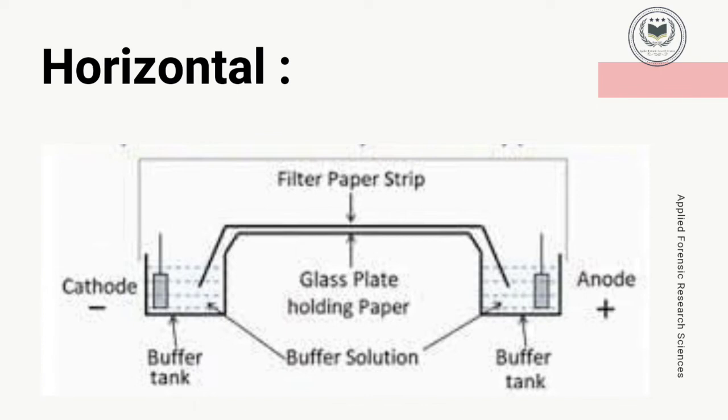The sample is placed on the filter paper strip in the center, either in the form of a round spot or a line. After placing the sample on the filter paper strip, it is covered with a safety cover and the cathode and anode are connected to the power supply.